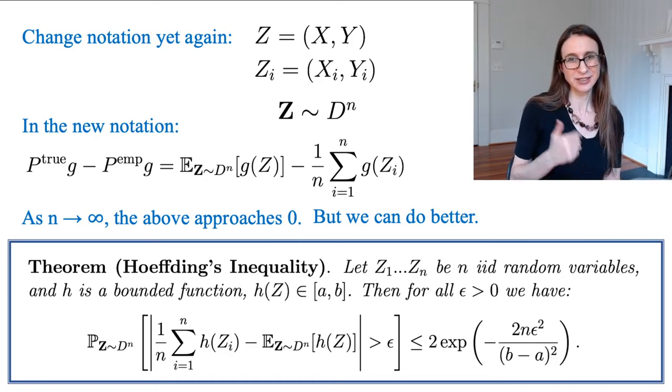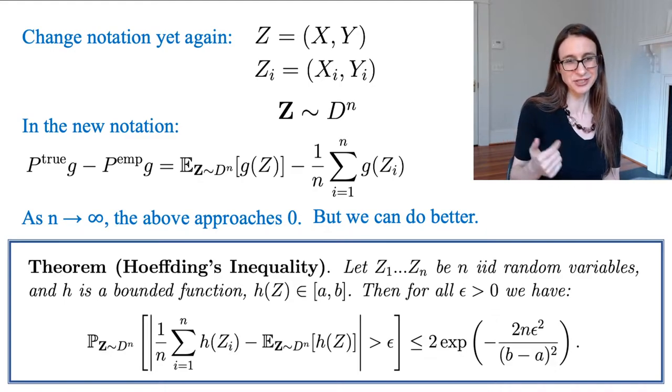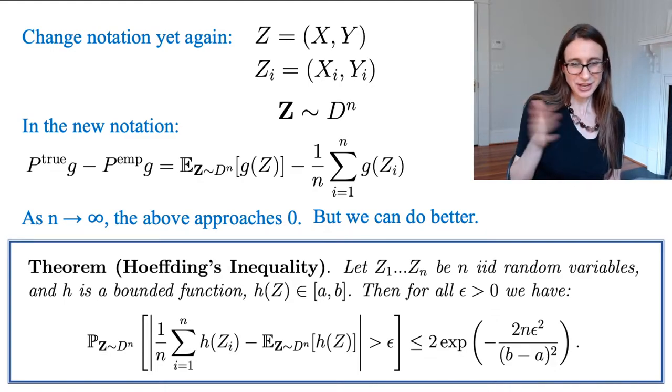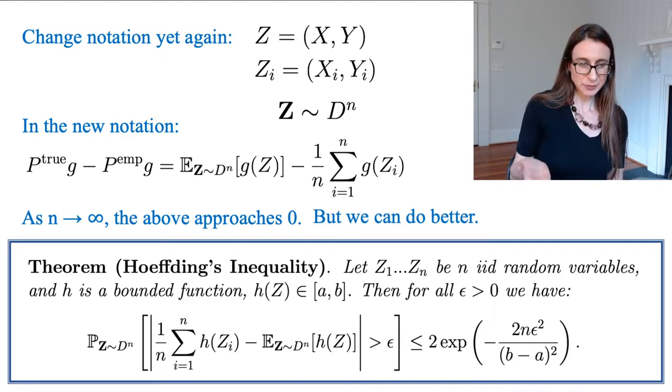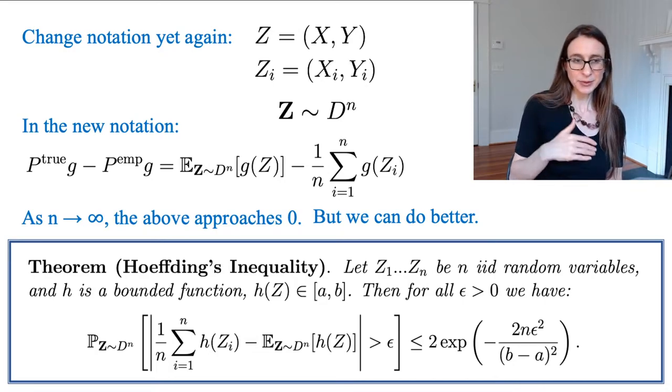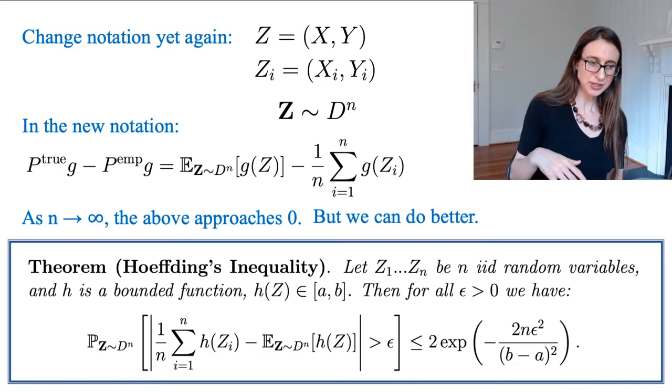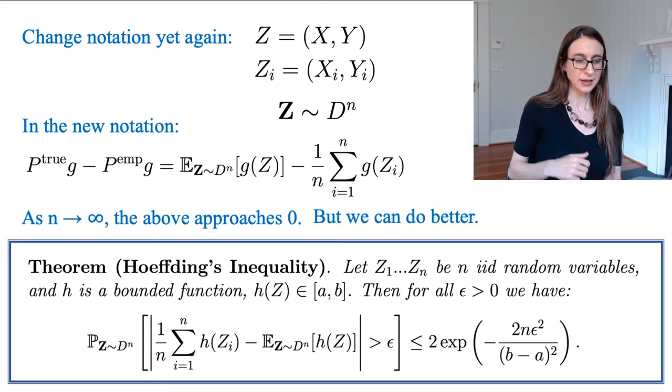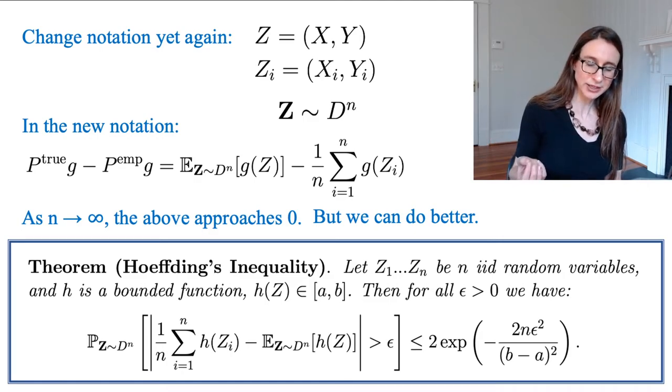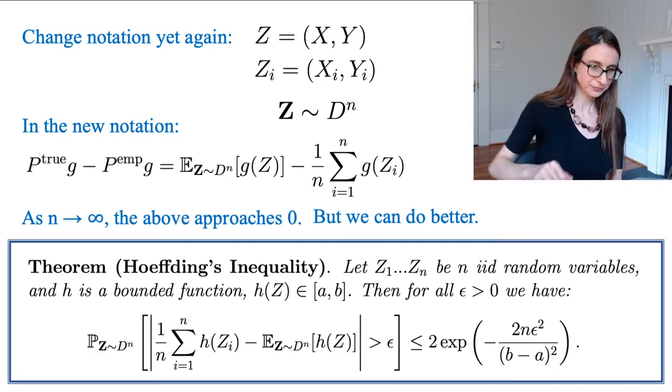All right, so let's read it. So let Z_1 to Z_n be n IID random variables. And h is a bounded function. So the bounds are a to b. Now for us, h is going to be a loss function. So the bounds are going to be between zero and one. The loss is either zero or it's one. So everywhere it says b minus a, that's just going to be one. Okay, so don't worry about a and b. Then for any epsilon you pick, the probability that a bad thing happens, which is that the average and expectation are far from each other, is small. And that small depends on some important quantities, namely the amount of data you have and the epsilon you chose.